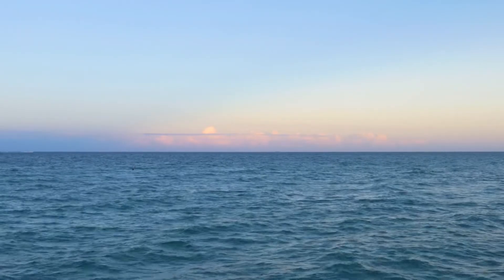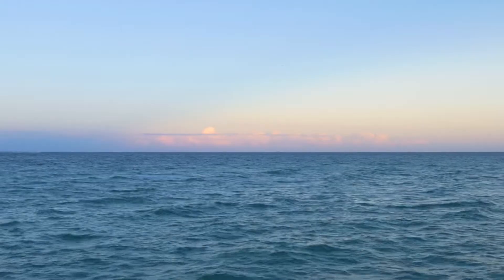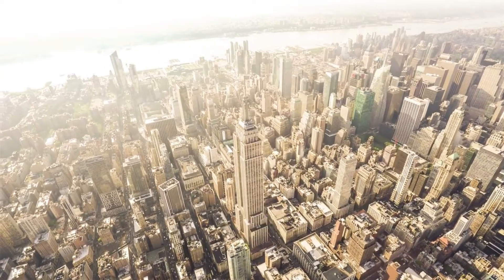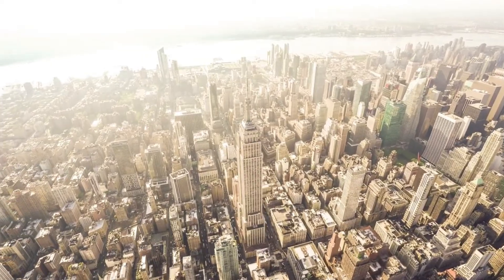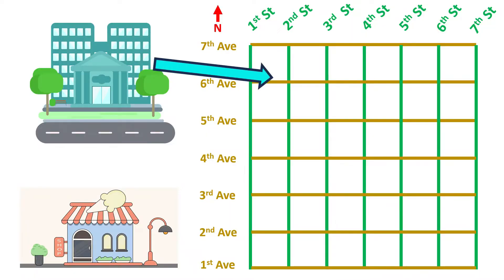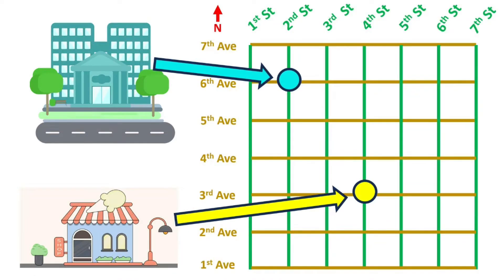Before we solve a complicated problem like finding a specific place in an ocean, we'll see how people can find their way in some cities. Let's say you and your family are visiting a city like New York and staying in a hotel on the corner of 6th Avenue and 2nd Street. You hear about a wonderful ice cream shop on the corner of 3rd Avenue and 4th Street that you and your family want to walk to.